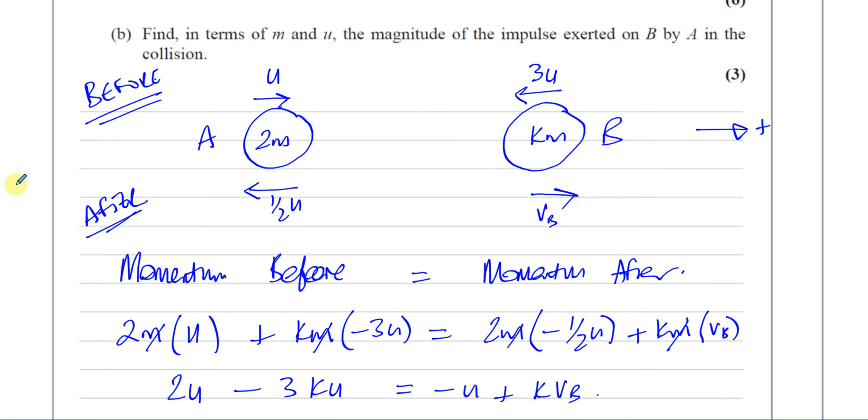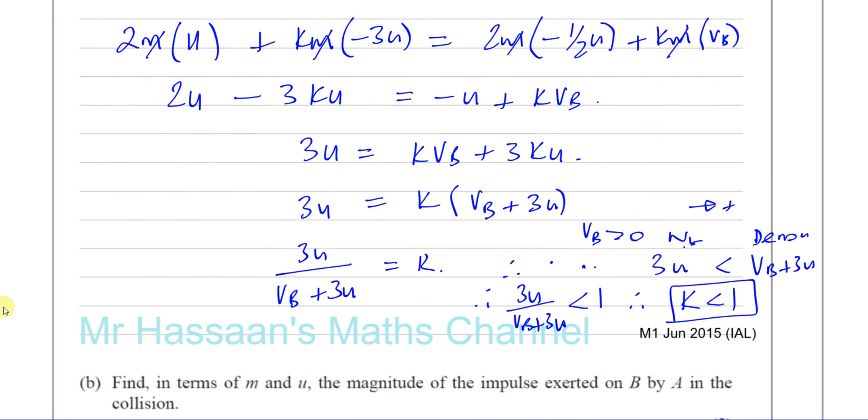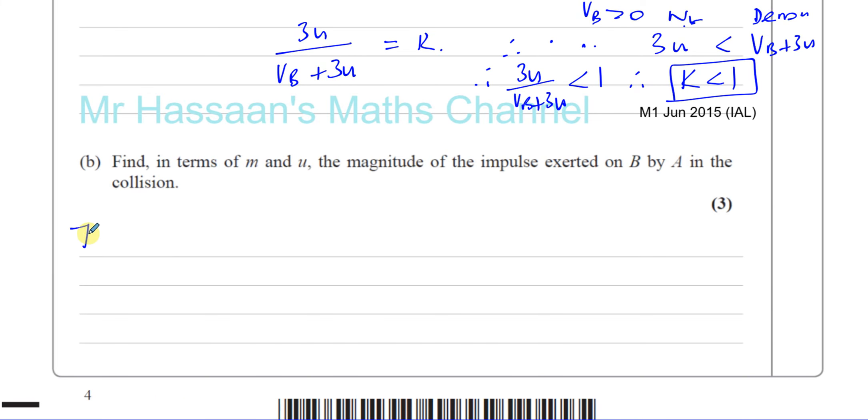So basically the impulse is a change of momentum. So I is equal to M V minus M U. Or you can say, which is the same as saying M times V minus U. So the mass of A is 2M.